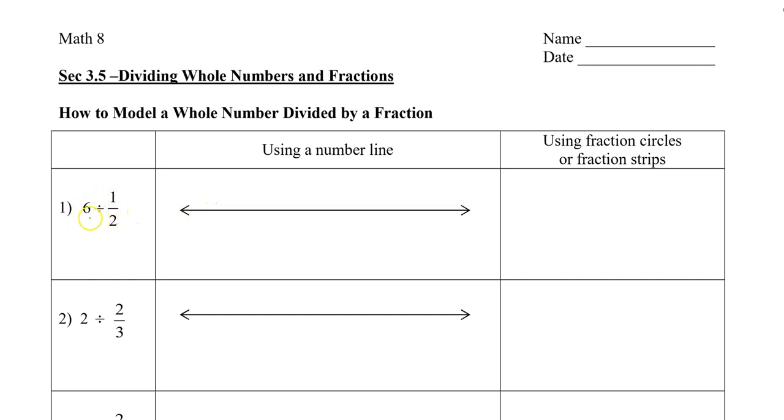Our first question here says that 6 is divided by half. So what we're thinking is that we have 6. So I'm going to start with 0 and we'll go 1, 2, 3, 4, 5, and 6. And what we're doing is we're going to take 6 and we're going to divide it into half parts.